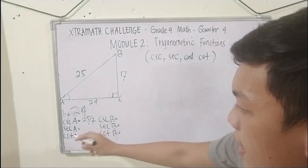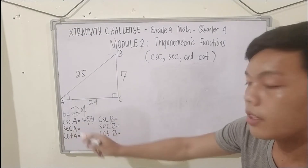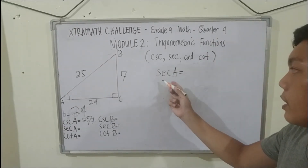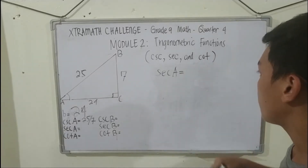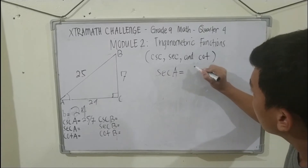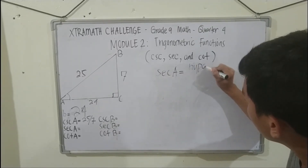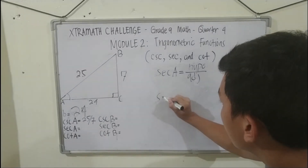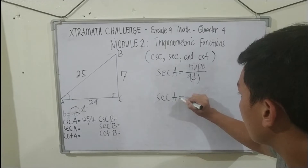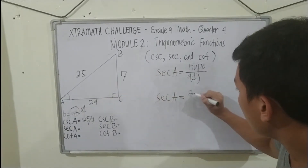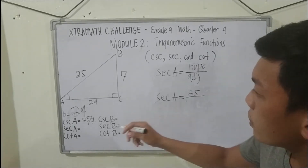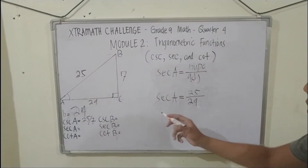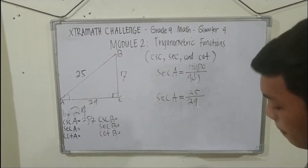In the third problem, we are asked to find the ratio of secant A. Remember that secant is the reciprocal of cosine, so secant A is equal to hypotenuse over adjacent. Secant A is equal to our hypotenuse which is 25 and the adjacent of the reference angle A which is 24. So the ratio of secant A is equal to 25 over 24.